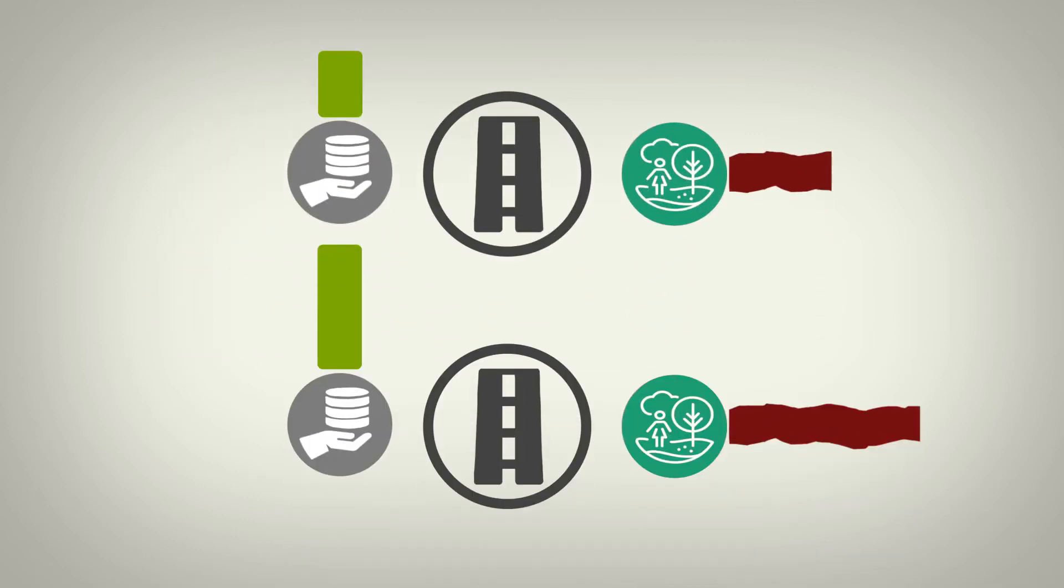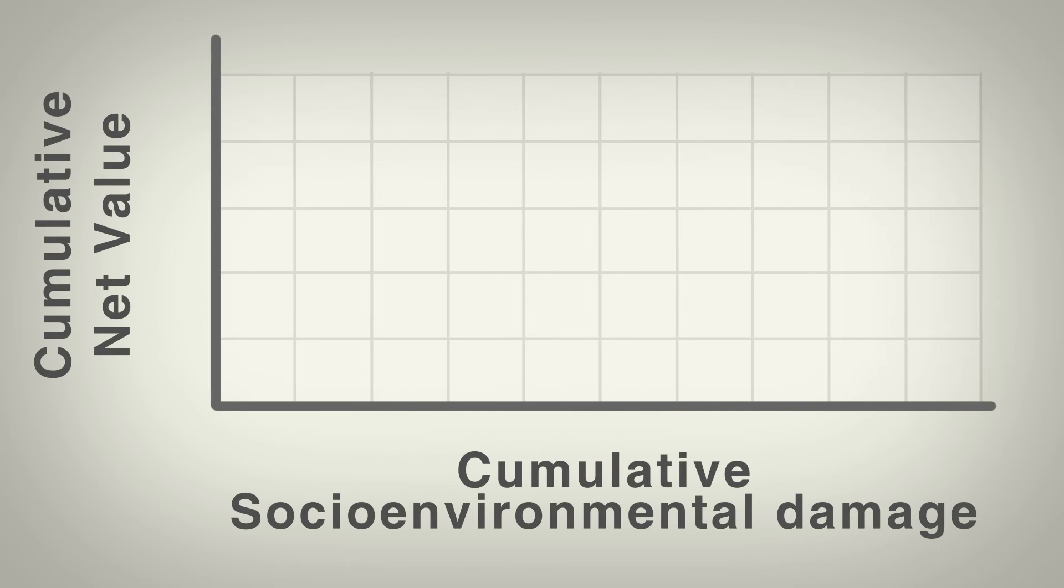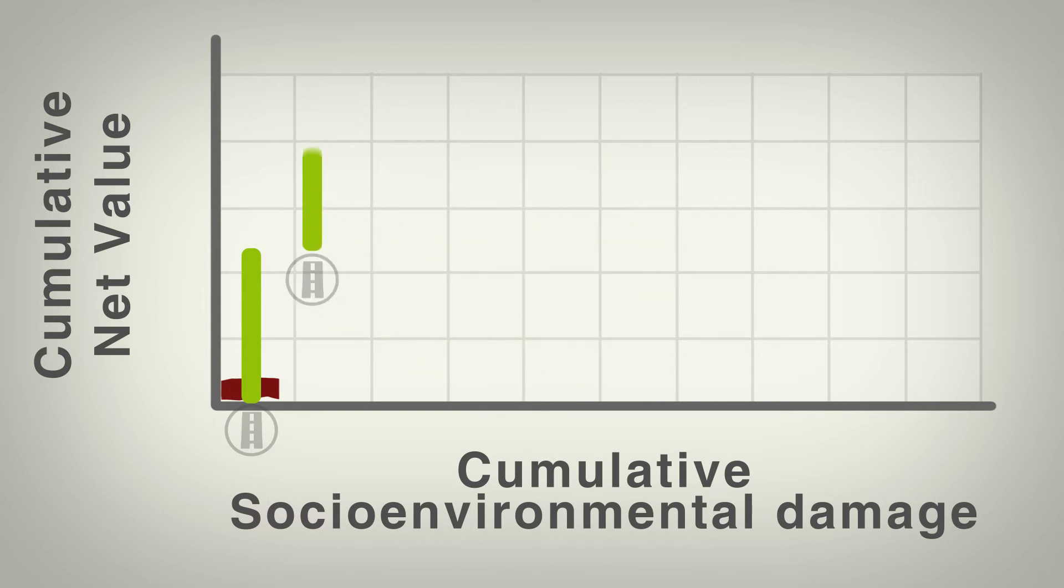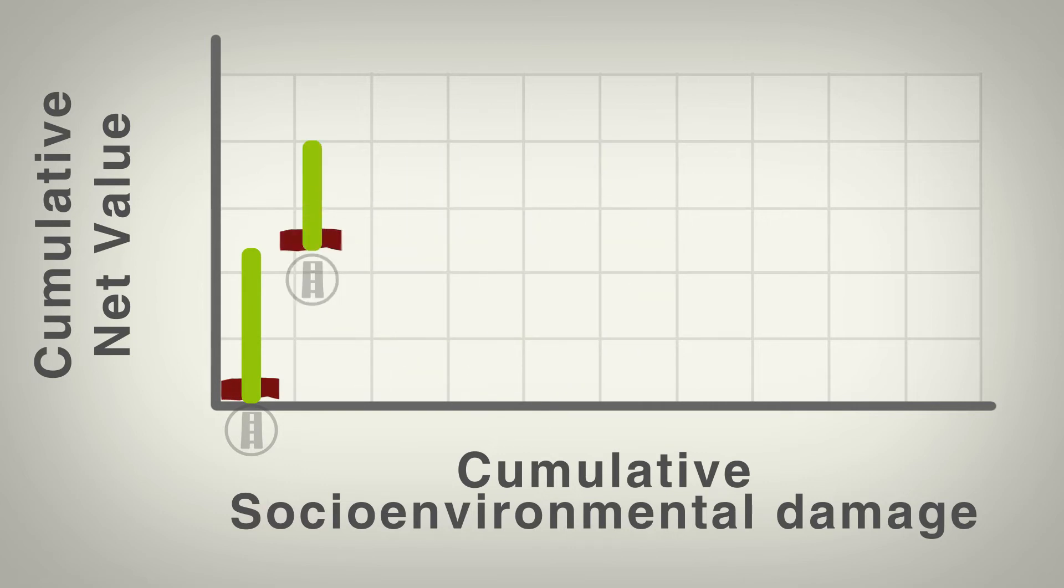With this method, an answer may not be dictated outright, but it's a cheaper analysis and it's still very useful. For example, let's say this road project gives this much economic benefit for this much socio-environmental damage. This road gives this much economic benefit for this much socio-environmental damage and so on.